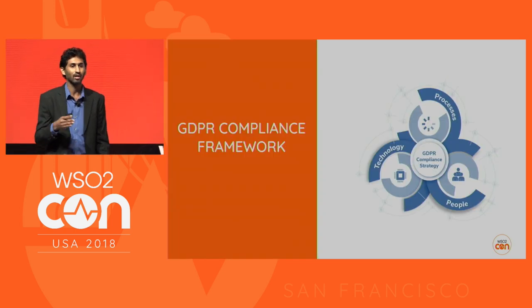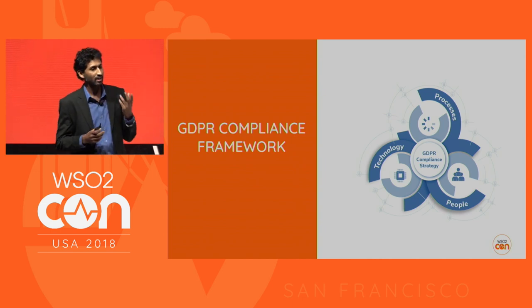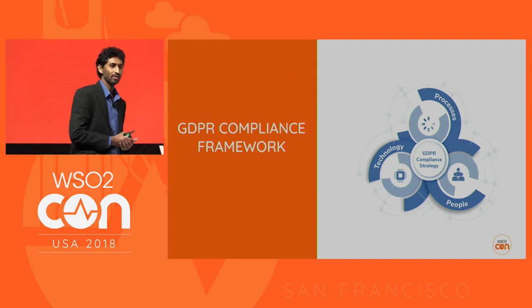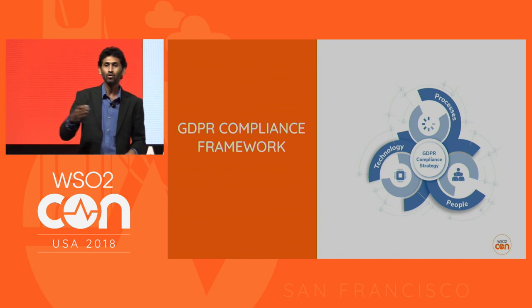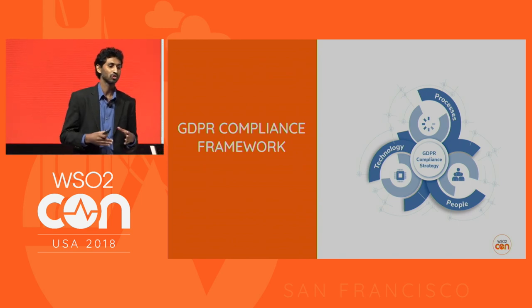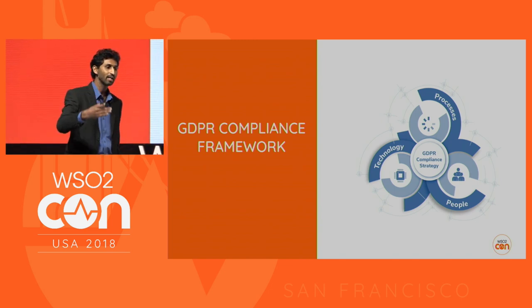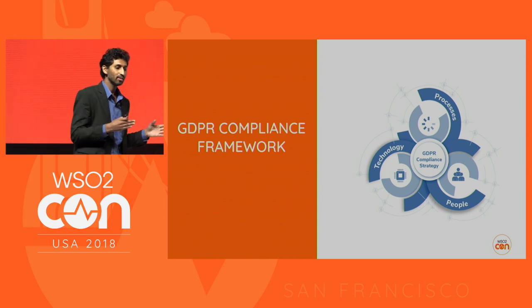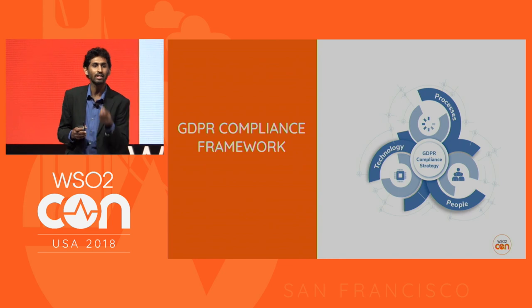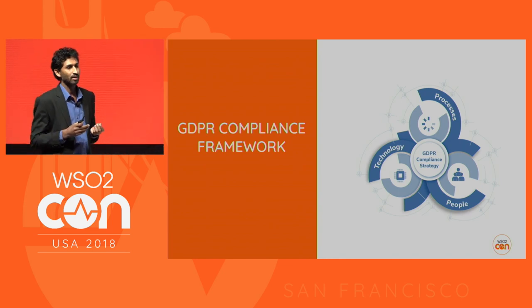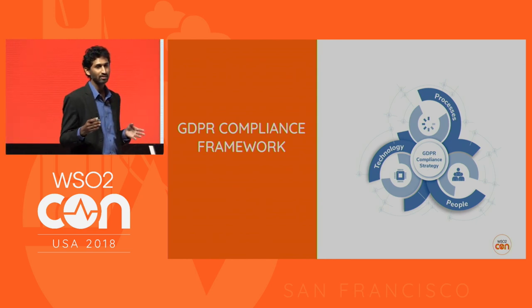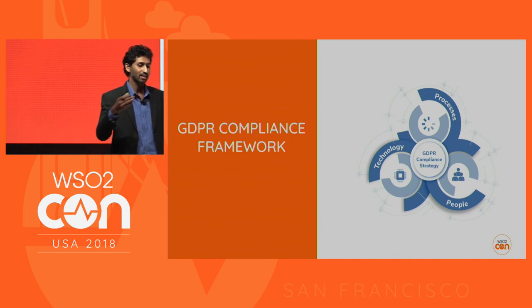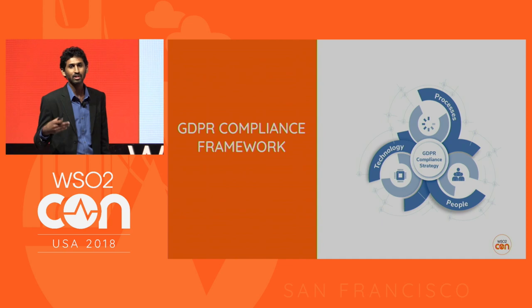Implementing this kind of thing involves several dimensions. The first is people — you need to identify not just software developers but also legal, HR, and many more. Then you need the correct processes on the software side, HR side, and marketing side. At the same time, you need to find the correct technology — if your software or network doesn't support implementing a GDPR or privacy compliance solution, it won't work. You need to identify the correct technologies to implement any privacy compliance solution.